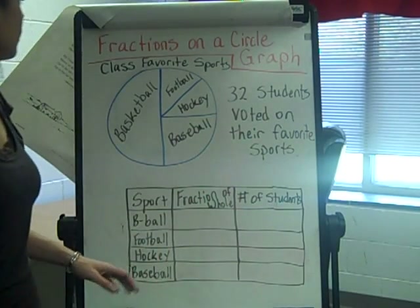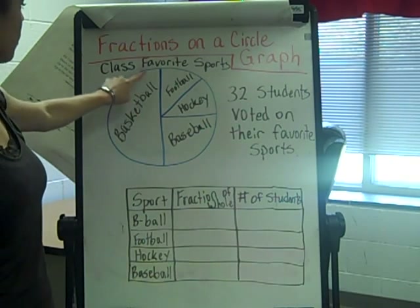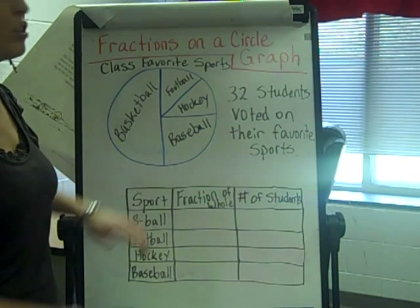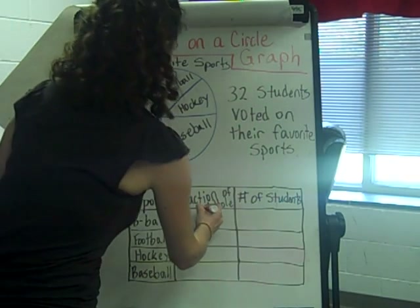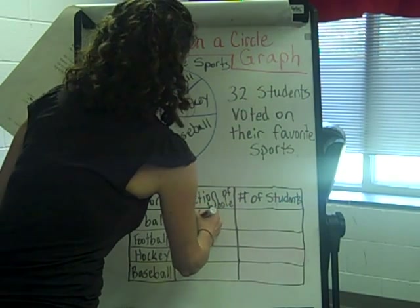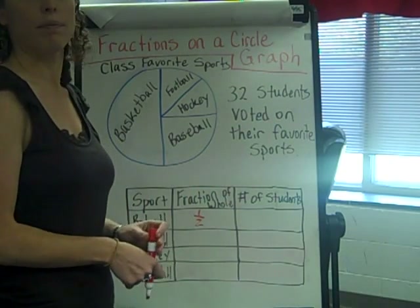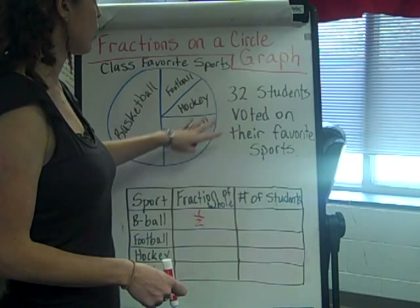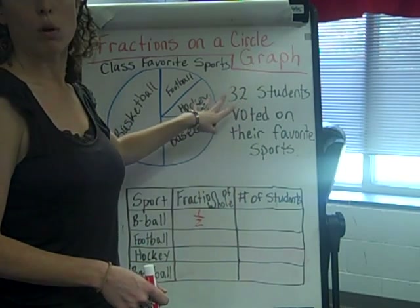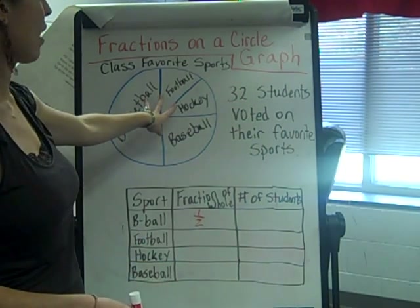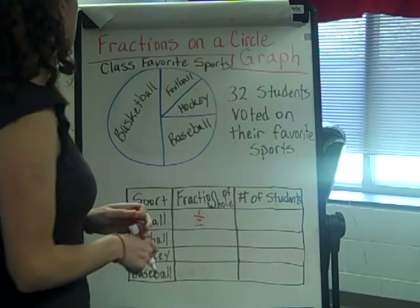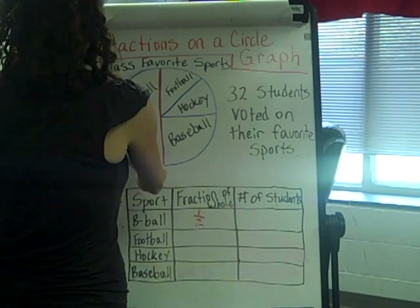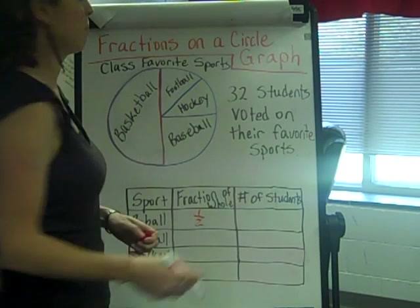When you look at it, one jumps out — basketball in this case — because it is half of the circle. So one half of the students have voted for basketball as their favorite sport out of the 32 students that voted total, since 32 is the whole we're working with on this circle graph. Here is half of my circle for basketball.